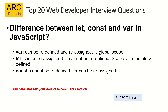Explain the difference between let, const, and var in JavaScript. These are all used for defining variables but differ in behavior. var can be redefined, reassigned, and has global scope. let allows you to reassign the value, but you cannot redeclare or redefine the variable. const cannot be redefined and cannot be reassigned. This is an extremely important question — make sure you get it exactly right.